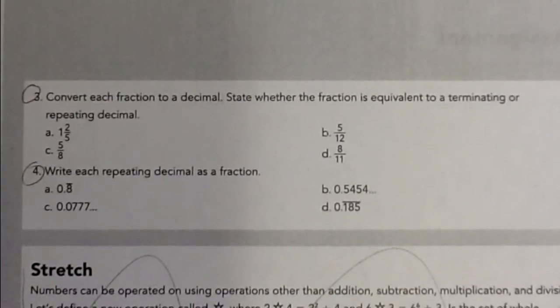Number 3 says convert each fraction to a decimal. State whether the fraction is equivalent to a terminating or repeating decimal. Terminating means it ends, and repeating means it repeats.